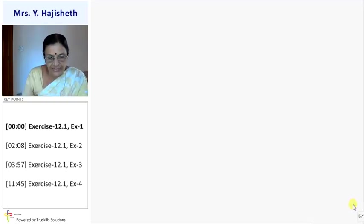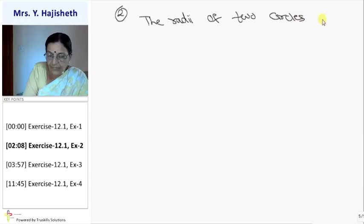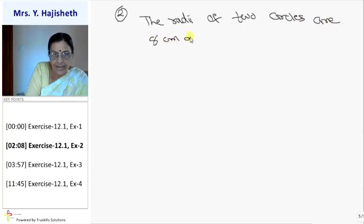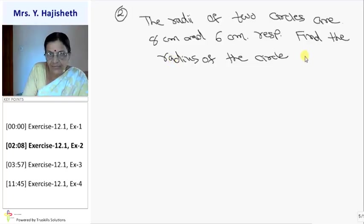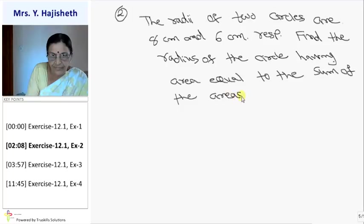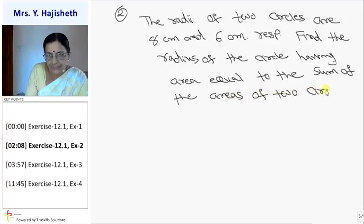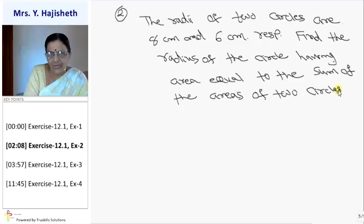Second sum: The radius of two circles are 8 centimeter and 6 centimeter respectively. Find the radius of the circle having area equal to sum of the areas of two circles. Previous sum had perimeter equal to sum of perimeters. Method is same, only formula will be different.